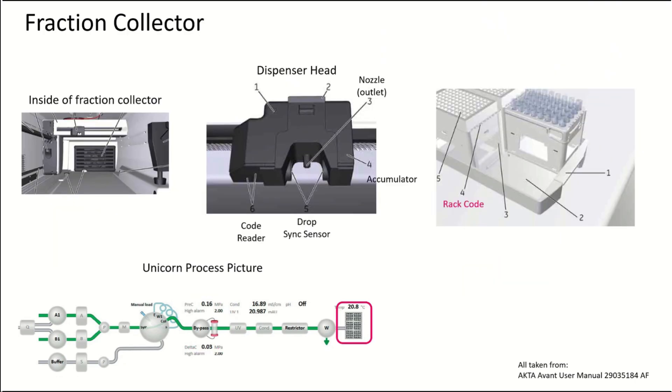Then after that, the fraction collector with the dispenser head has a code reader. The code reader reads the code on the rack. This is how the system can tell the difference between, say, a 96-well plate rack and a 15 mil conical tube rack. The code reader can also sense whether a 96-well plate is there. It can't tell you whether fractions are there or not, though, for conical tubes.